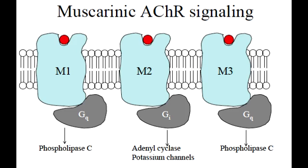The G-protein class of muscarinic-1 receptors is GQ. M1 receptors are found in the CNS and the enteric nervous system. The G-protein class of muscarinic-2 receptors is GI. The effects of M2 receptor stimulation are to decrease heart rate and contractility of the atria, because these receptors are found in nodal tissues.